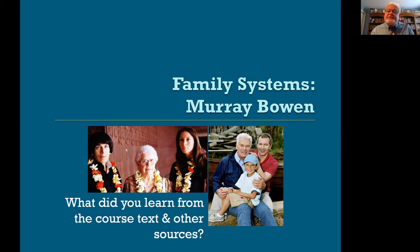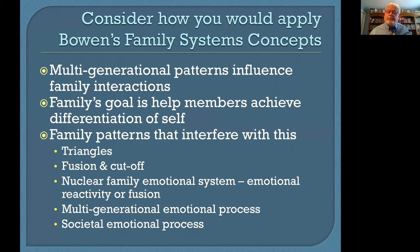Murray Bowen presented and created a model that talked about intergenerational patterns. Consider what you learned from the course textbook and from other sources, and jot down your ideas and any questions you may have so that we can talk about these in class. Some of the primary concepts in Bowen's family systems approach is that multi-generational patterns influence family interactions, and that the family's ultimate goal is to help members achieve differentiation of self — a person's ability to balance emotional reactivity with thinking to produce better problem solving and decision-making.